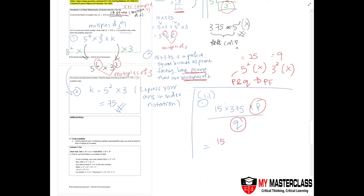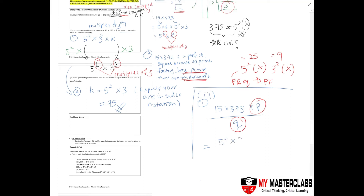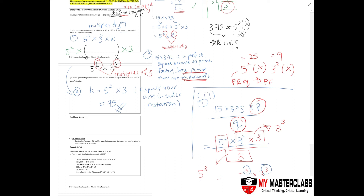Since 15 times 375 gives 5 to the power of 4 times 3 to the power of 2, to make a perfect cube we need to multiply by 3 and divide by 5. Multiplying by 3 turns 3² into 3³, and dividing by 5 turns 5⁴ into 5³. Both 5³ and 3³ have powers that are multiples of 3, confirming the result is a perfect cube.